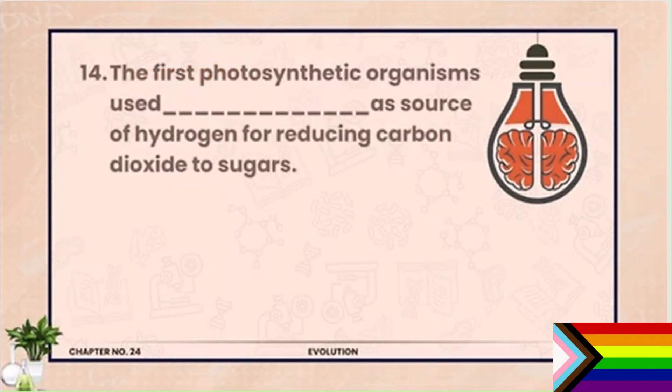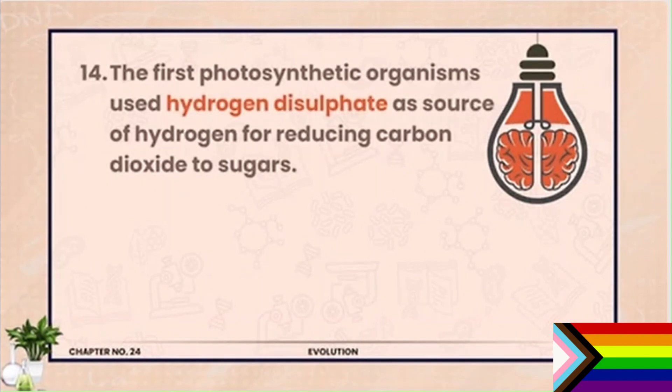Question 14. The first photosynthetic organisms used hydrogen disulfide as a source of hydrogen for reducing carbon dioxide to sugars.